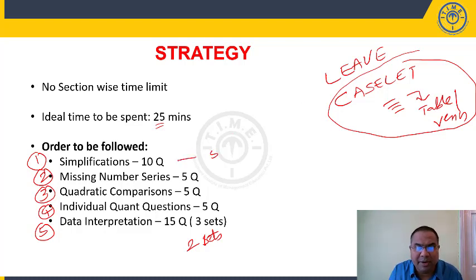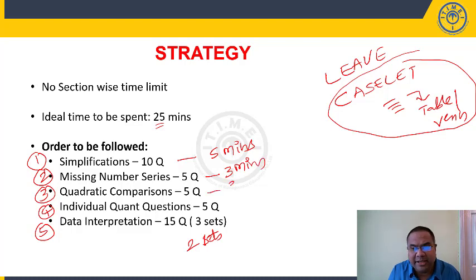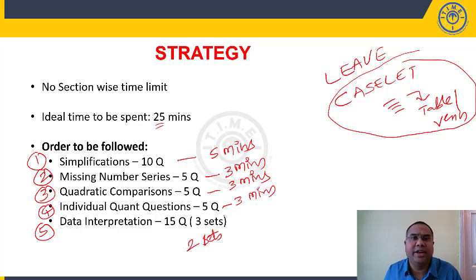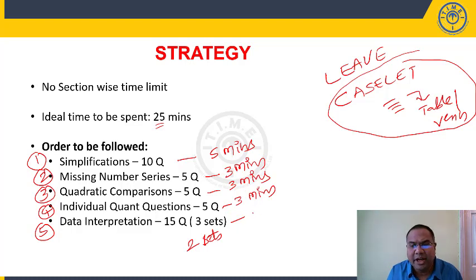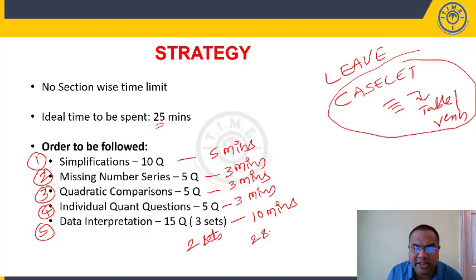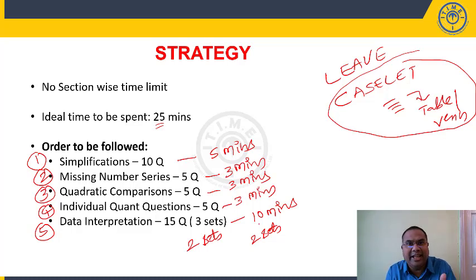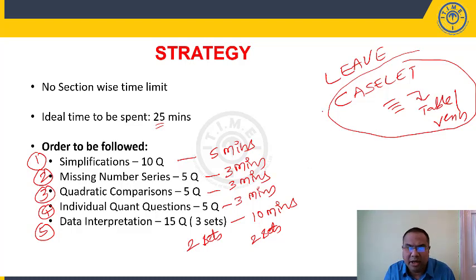For time allocation: 10 simplification questions — spend 5 minutes; missing number series — 3 minutes; quadratic comparisons — 3 minutes; individual questions (5 questions) — 3 minutes, solving 3-4 easy ones. That's about 14 minutes. Then spend 10 more minutes on DI — selecting 2 sets, approximately 5 minutes per set. If you finish a set quickly, use the remaining time for other areas or attempt the caselet.